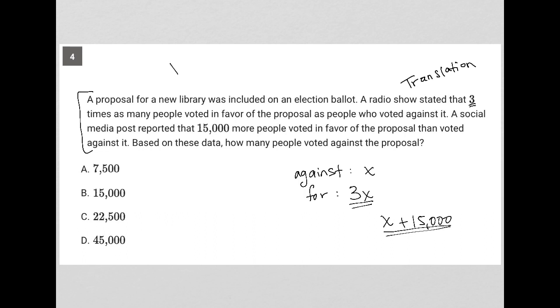I could just use a plug-in answers scenario here. Let's see, could it be true that 7,500 people voted against? Well, if 7,500 people voted against, then based upon this first criteria, we'd have three times that number or 22,500 people who voted for it.